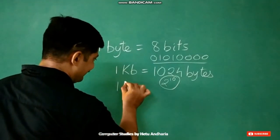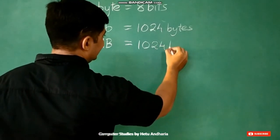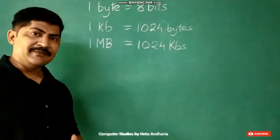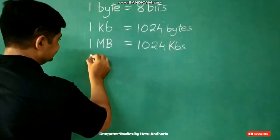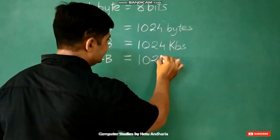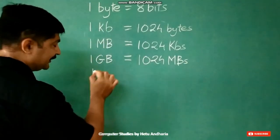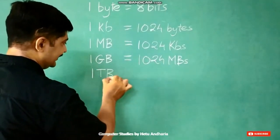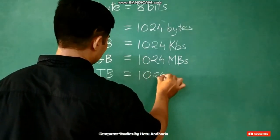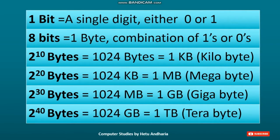After kilobyte comes megabyte. 1 MB is equal to 1024 KB. After MB, the next bigger unit is GB. 1 GB is equal to 1024 MB. After that, the next unit is terabyte, which we call TB. Here I have displayed all these things in tabular form. You can pause the video here and try to remember this information.